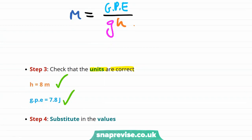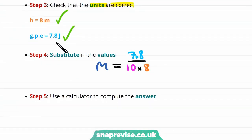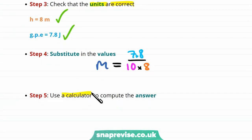Substituting in the values — 7.8 joules divided by gravitational field strength multiplied by 8 meters — and using a calculator, we find the mass is equal to 0.0975 kilograms.